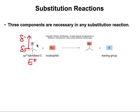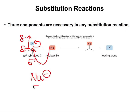So the halogen will become the leaving group. The nucleophile will come and attack the electrophile, and because the carbon can only be bonded to four things at a time and it's already connected to four, something has to go. In this case, my X will leave, and that is my leaving group. So those are the three elements that you always look for: a nucleophile, an electrophile, and a leaving group.